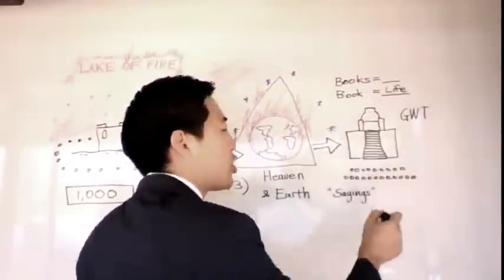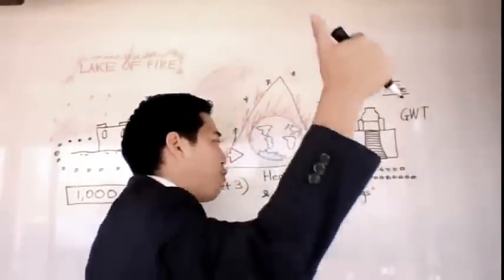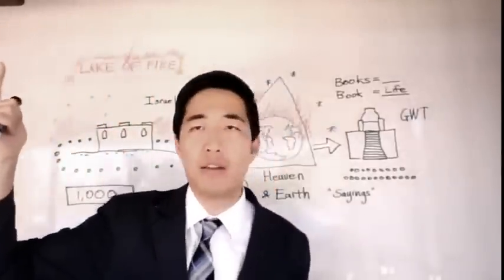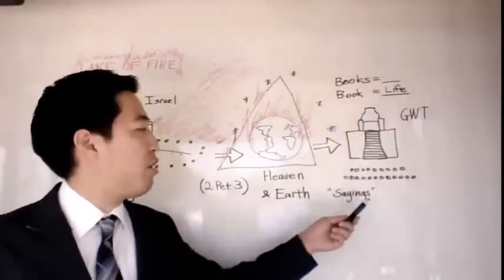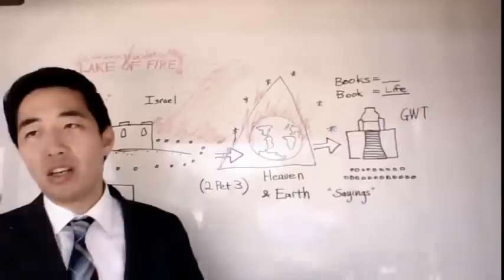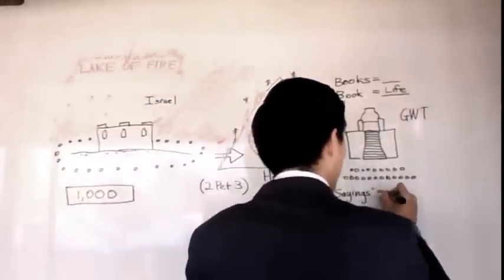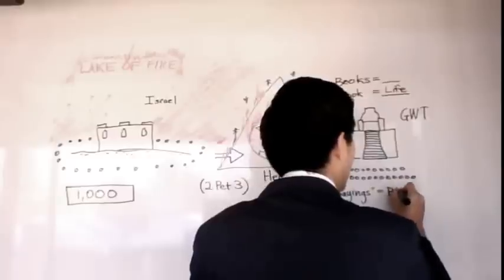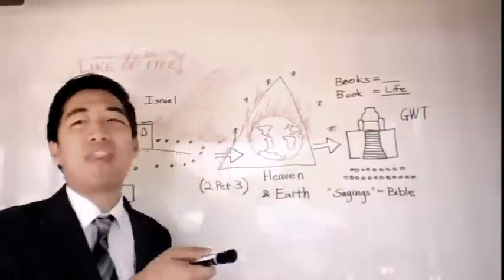When will God judge people? Right here, the Great White Throne Judgment. That's the context of Romans 3, Psalms 51. Great White Throne Judgment. In the passage, it shows over here, he's going to be justified in his what? Sayings. His word. The Bible. But also it says he'll be clear when he speaks. He has to overcome when they judge him.